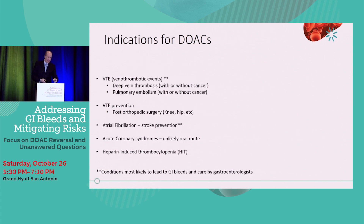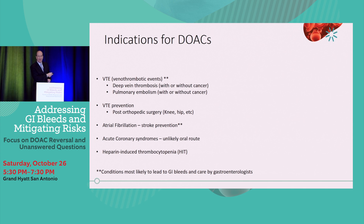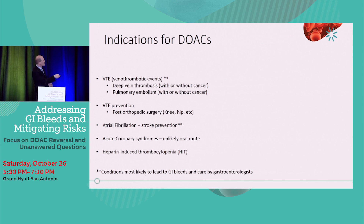The indications for DOACs and why you're seeing patients on these drugs: VTE events — DVT or PE, with or without cancer; VTE prevention for patients post-knee or hip replacement, typically for 10 to 21 days depending on the surgeon; atrial fibrillation; and some IV uses in acute coronary syndromes and heparin-induced thrombocytopenia. The ones that affect GI doctors most are patients being treated for DVT or PE, on stroke prevention for atrial fibrillation, and those on VTE prevention post-orthopedic surgery.